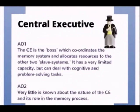There are three components to the working memory model. The first is the central executive, which is like the boss that coordinates the memory system and allocates resources to the other two slave systems. It has a very limited capacity but can deal with cognitive and problem-solving tasks. It is helpful to think of the central executive like the Fat Controller from Thomas the Tank Engine. When information comes in, the central executive decides which slave system is best suited to deal with that type of information and directs it accordingly.